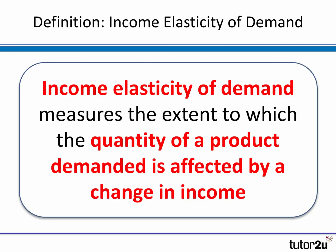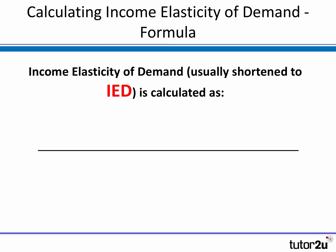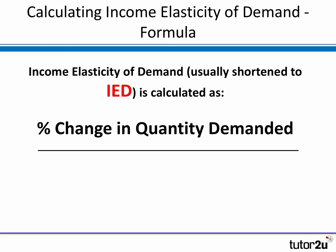You can see from that definition that we are going to be looking at percentage changes again, in the same way that we do when we look at price elasticity. Income elasticity of demand is usually shortened to IED, and it's calculated by comparing two percentage changes. We look at the percentage change in quantity demanded, and we divide that by the percentage change in income.